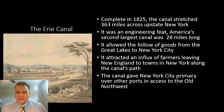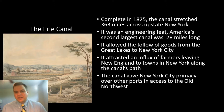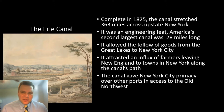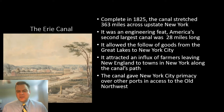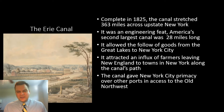The Erie Canal didn't just accelerate the flow of goods — it also attracted farmers leaving New England who settled towns along the canal in New York. Places like Buffalo, Rochester, and Syracuse sprang up as a consequence of the canal being built. The canal gave New York primacy over other ports in the United States and access to the Old Northwest.